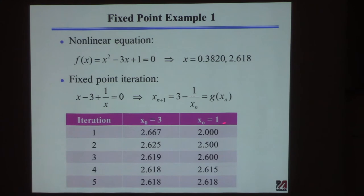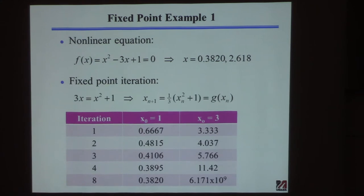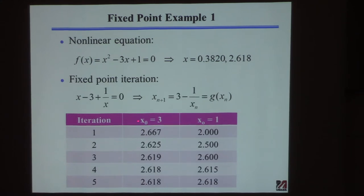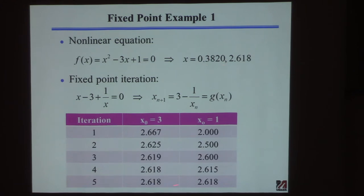I tried the same two guesses in reversed order — 3 and 1. Guess 3 was the one that didn't work before. Now I guess 3 and in 5 iterations I found the answer. But then when I tried to find the other answer, it just went to this answer again. It always worked but only found one answer.